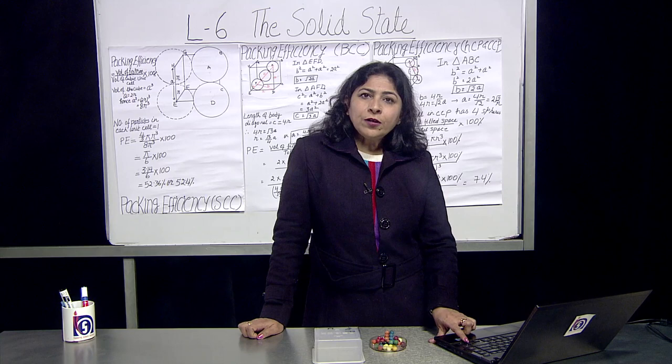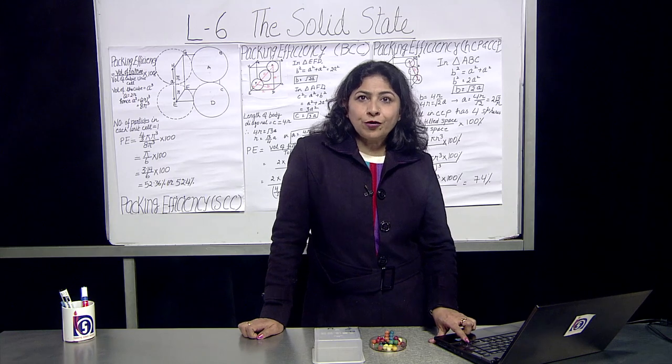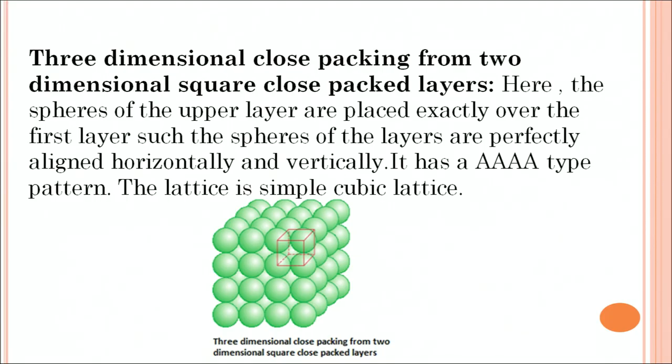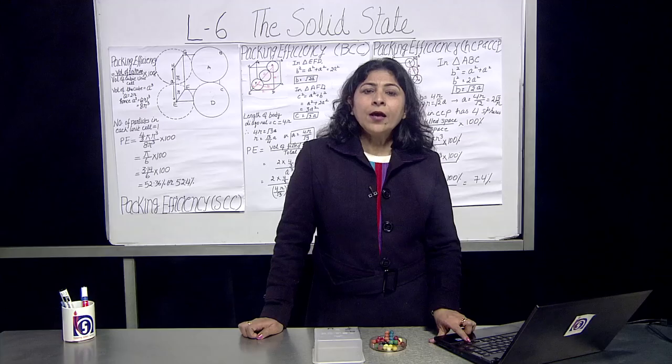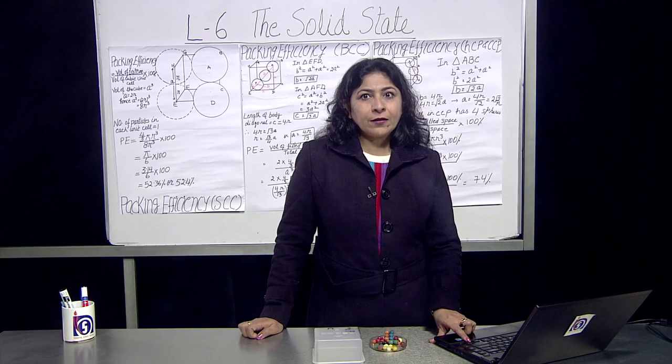This is two dimension. For three-dimensional closed packing, the spheres of the upper layer are placed exactly over the first layer such that the spheres of the layers are perfectly aligned horizontally and vertically. This is AAA type pattern and the lattice is simple cubic lattice.